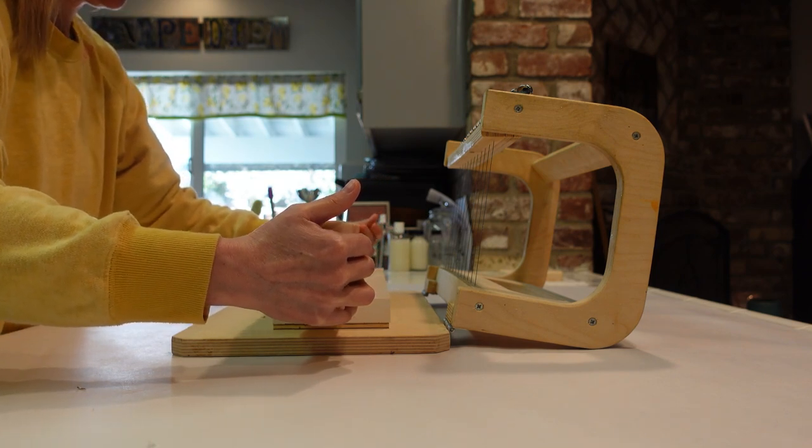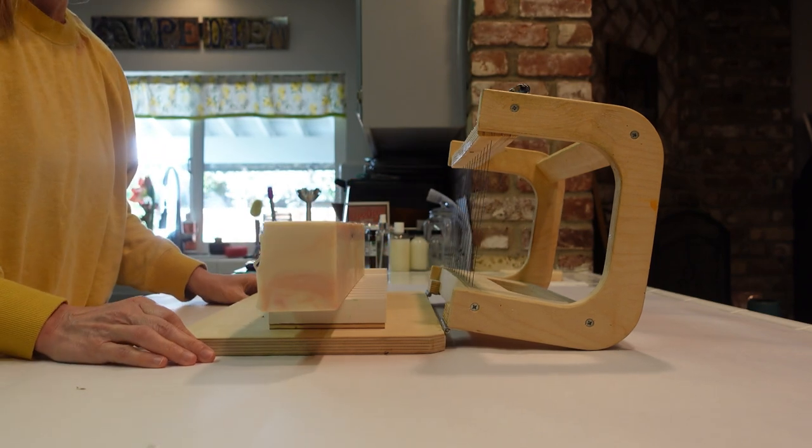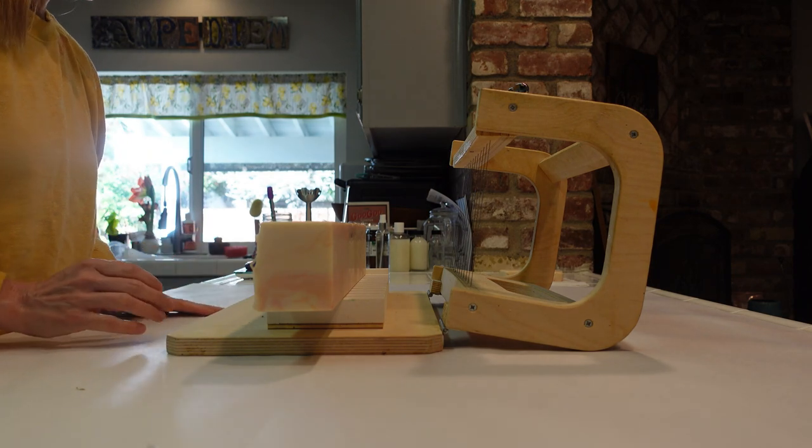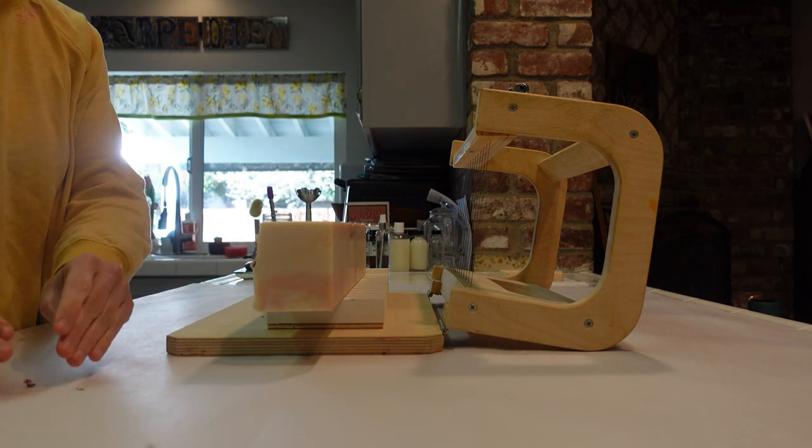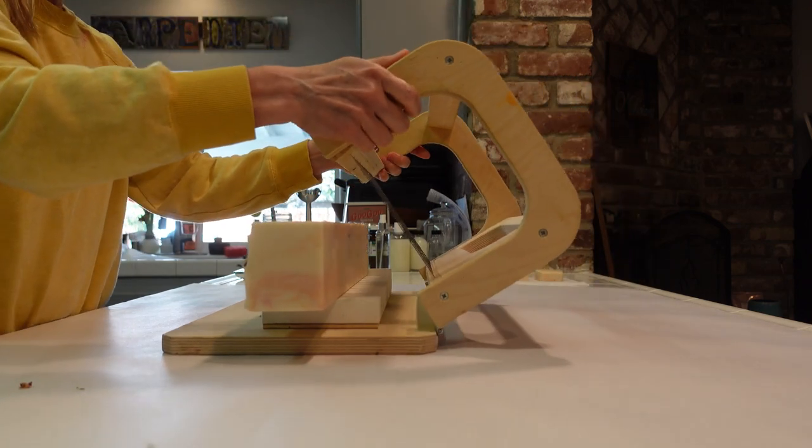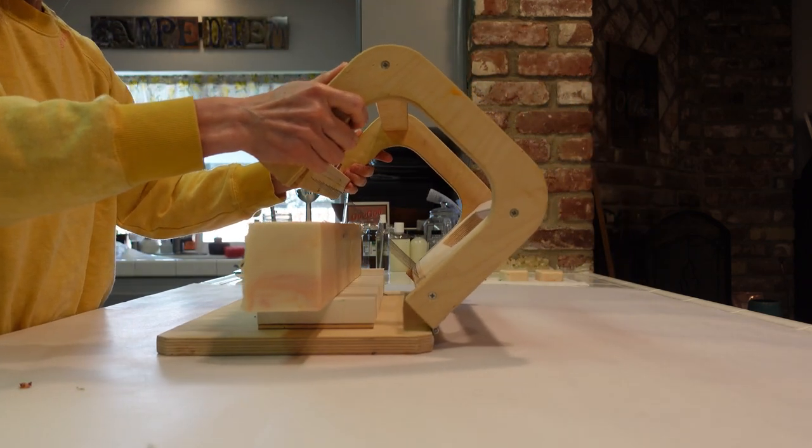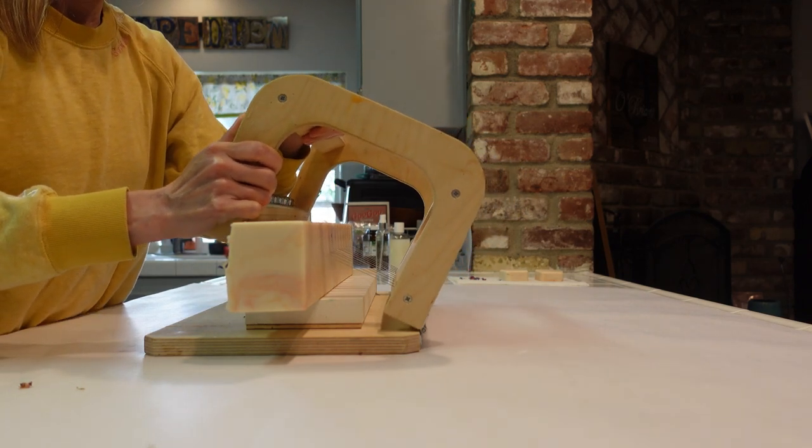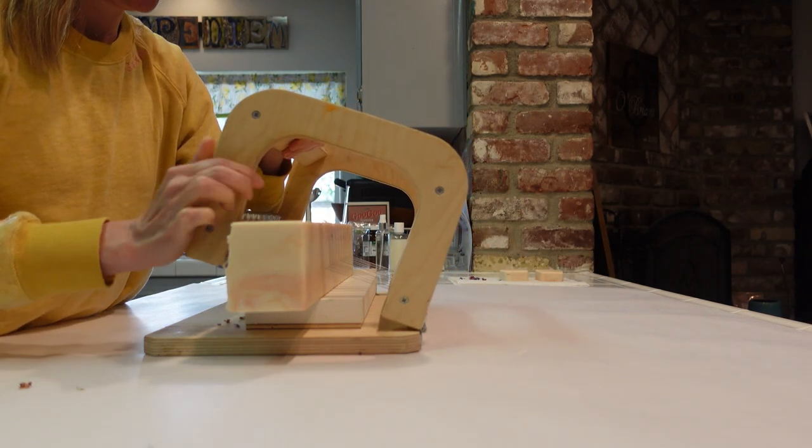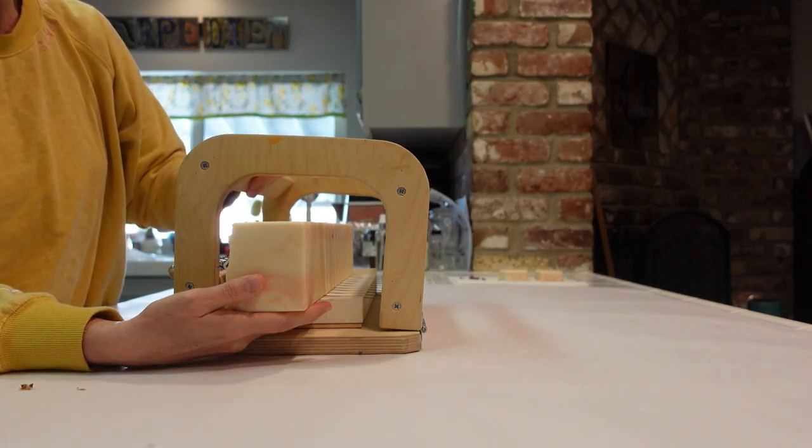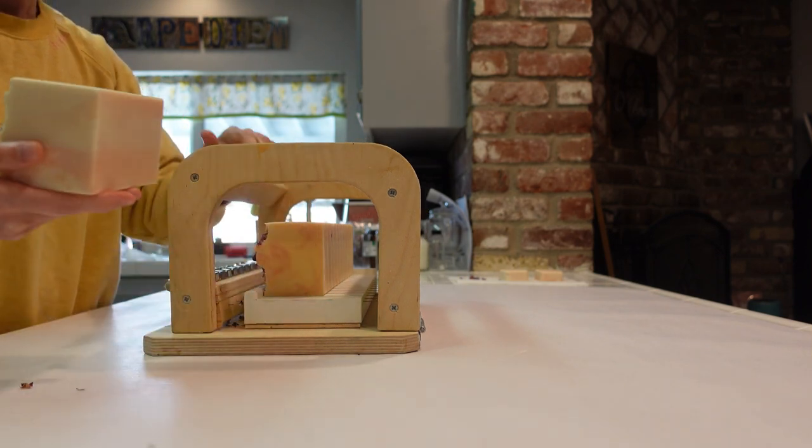Because if you put it up like this and you drag the cutter down through the botanicals, it can leave gouges in your soap. So we're going to go ahead and just go this way. And then as you can see, the botanicals are the last thing to be cut and they're falling out instead of dragging through.